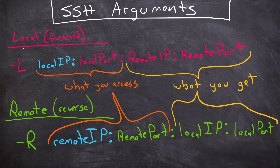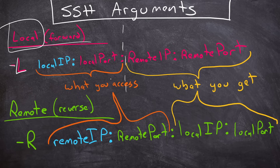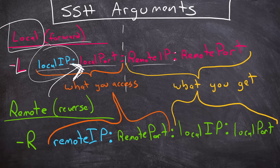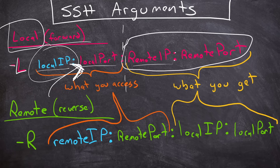To set up a local tunnel — we're going to call it a local tunnel because that's what it is — use the -L flag. The first half of the argument is where we access it or where we reach in: our local IP colon the port we want. If you don't specify the local IP, it's just going to assume you want to listen on localhost. Then another colon, the remote IP, another colon, and the remote port. If we connect to our local port that we specify, we will actually be reaching the remote IP and the remote port specified in the second half of this tunnel argument.